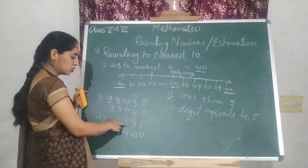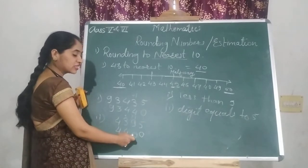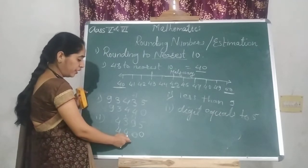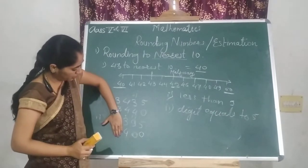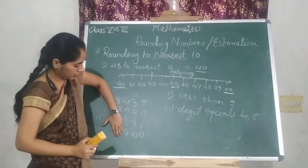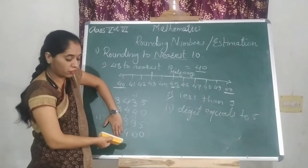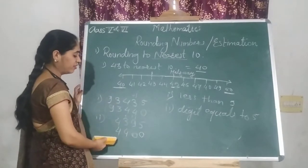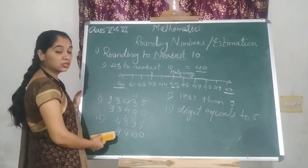So 4,395 to the nearest 10, what do we have to write? Think about this. You will get 4,400.